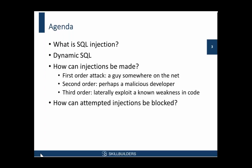Third order is sometimes called a lateral attack. The first order attack involves some guy somewhere on the internet. You've got a web application that's exposed — an internet-facing application — where the back-end is an Oracle database, and there's someone trying to break in. We'll see that for badly written code, that may be easier than you think.